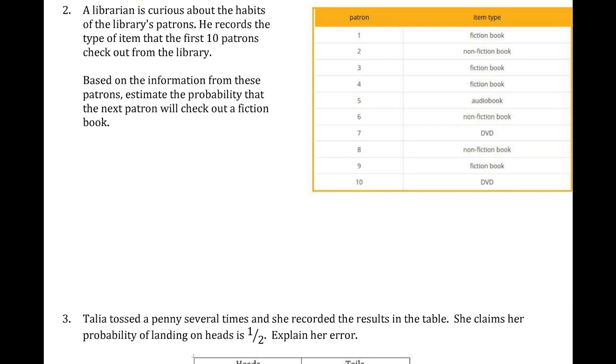Let's see how many fiction books were recorded. Patron one, patron three, patron four, and patron nine. That is four out of the ten patrons, which reduces to two-fifths.